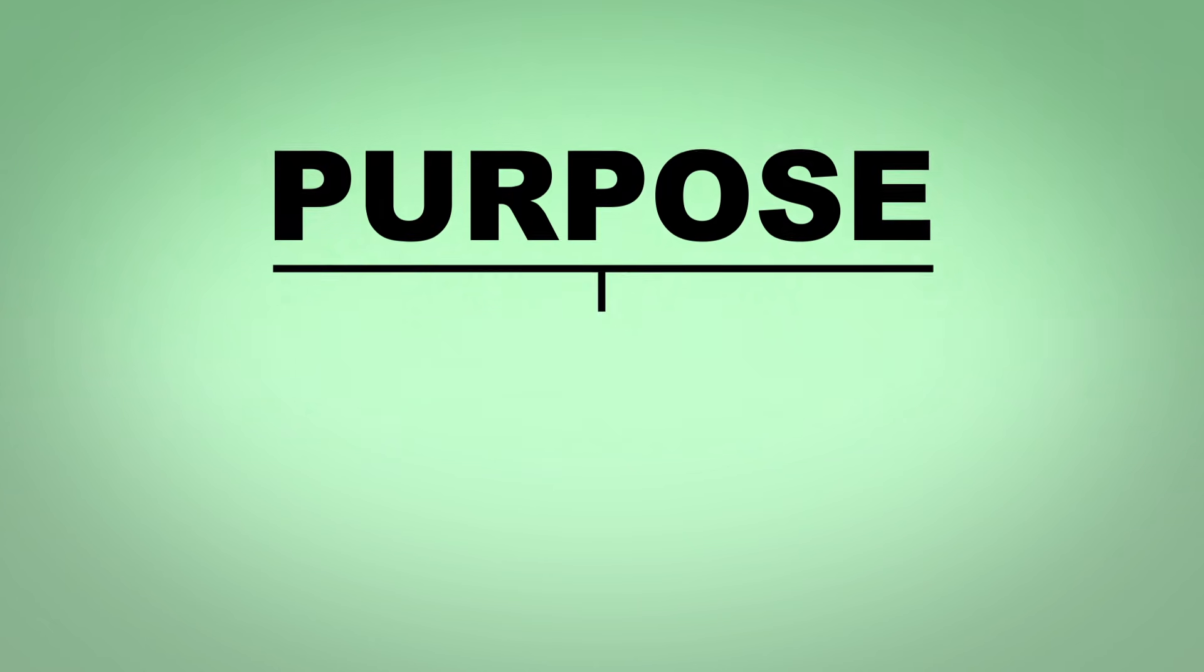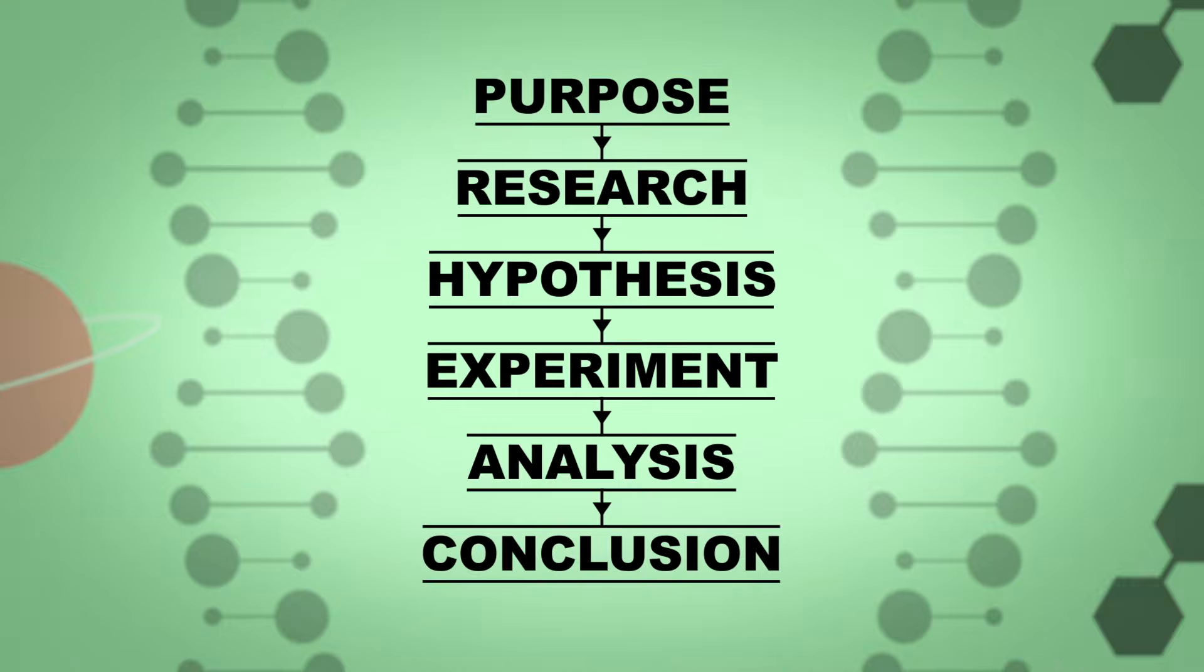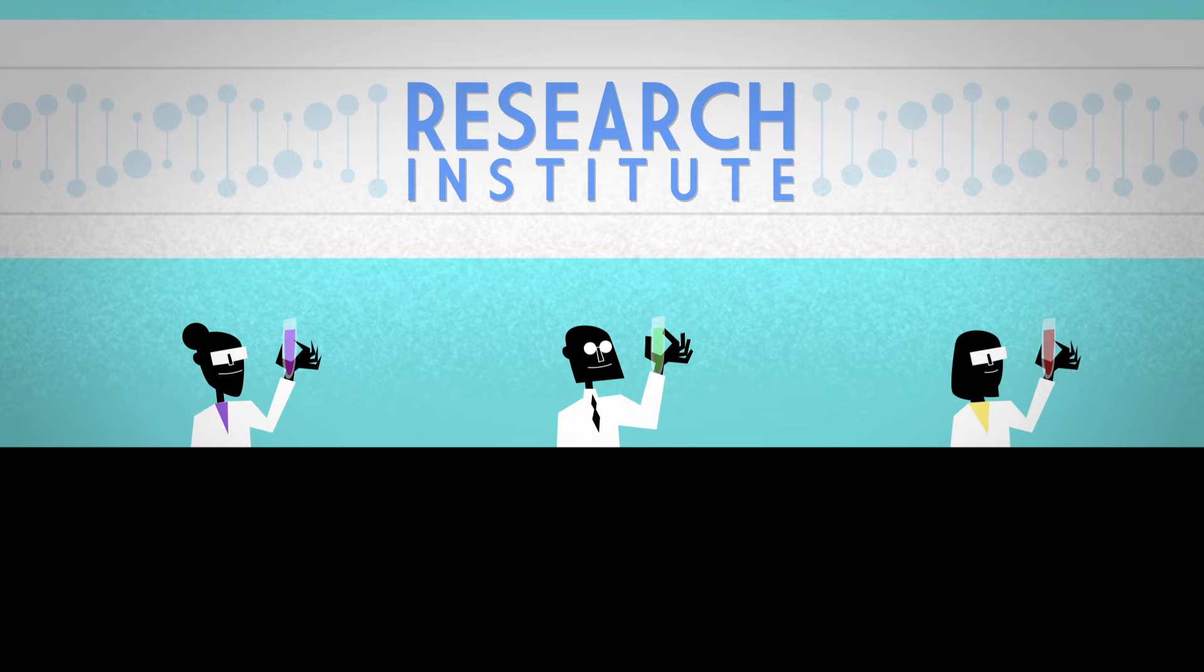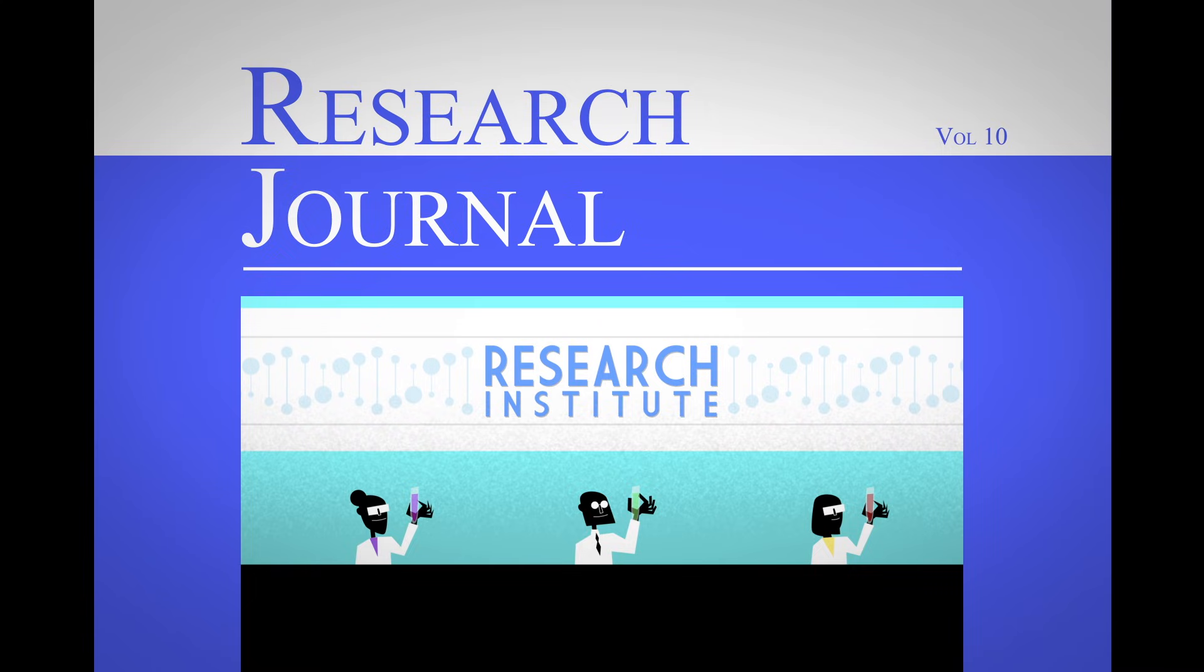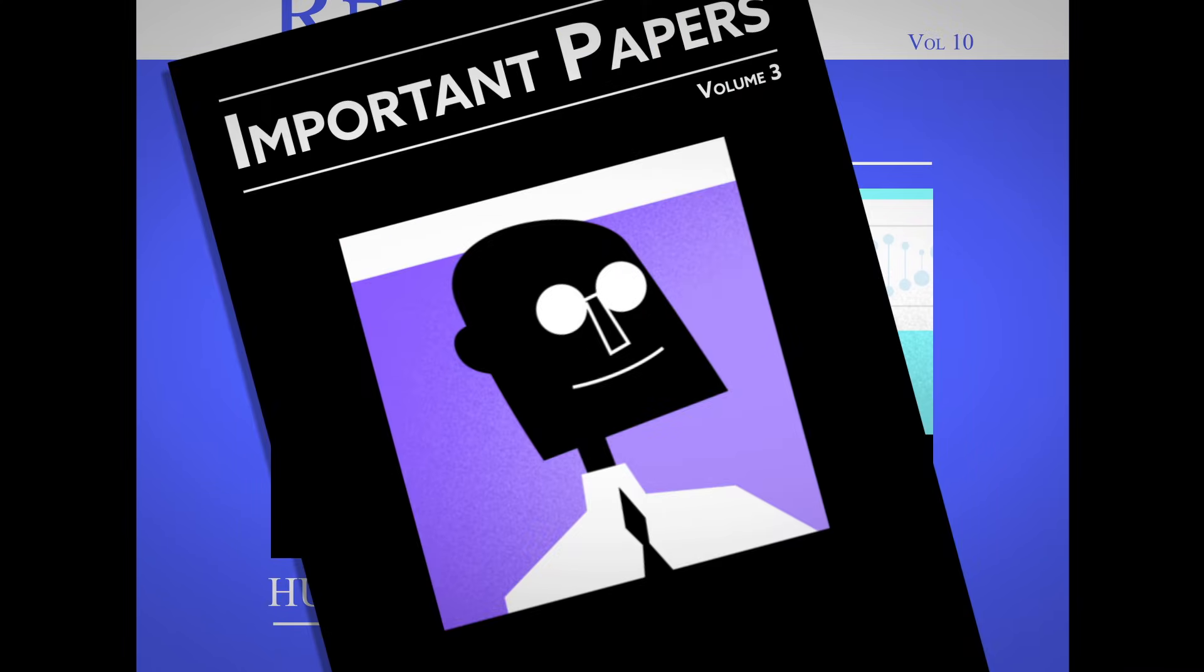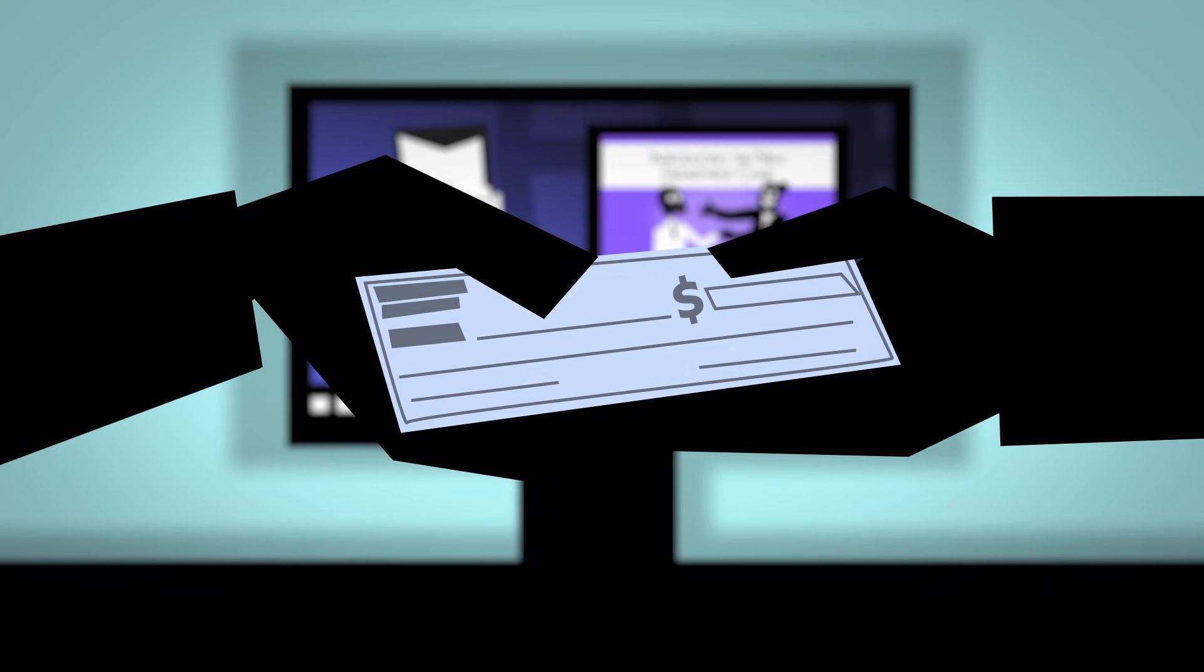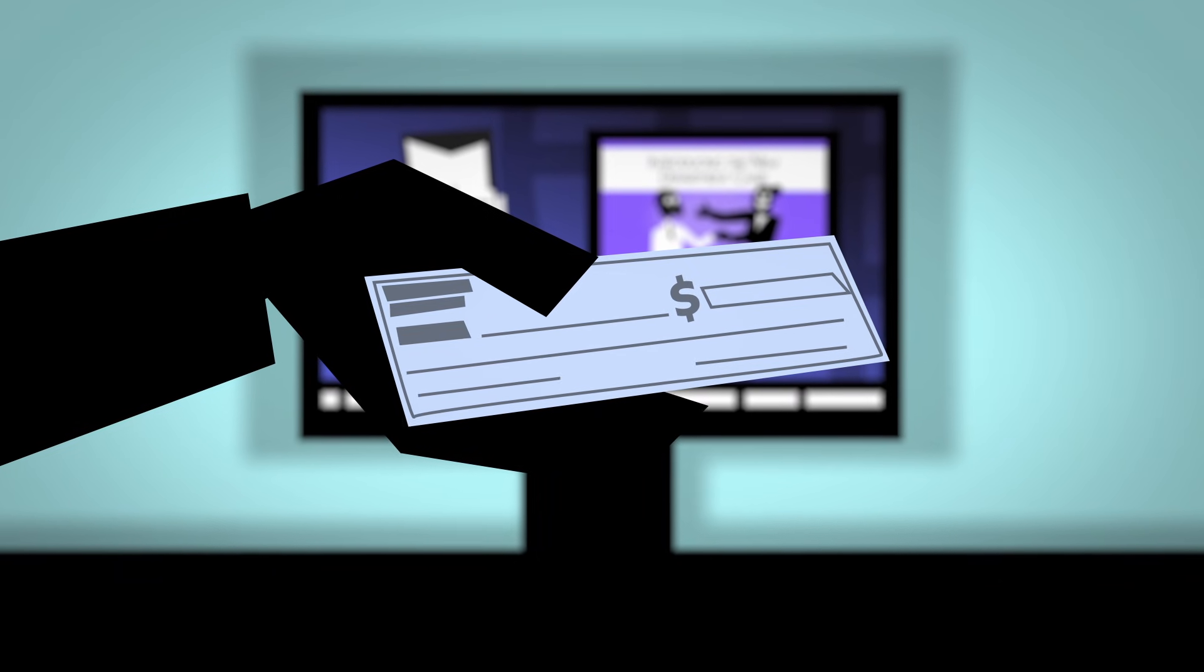However, some problems might stem from systematic decisions in how we do science. Researchers, the institutions that employ them, and the scientific journals that publish findings are expected to produce big results frequently. Important papers can advance careers, generate media interest, and secure essential funding. So there's slim motivation for researchers to challenge their own exciting results.